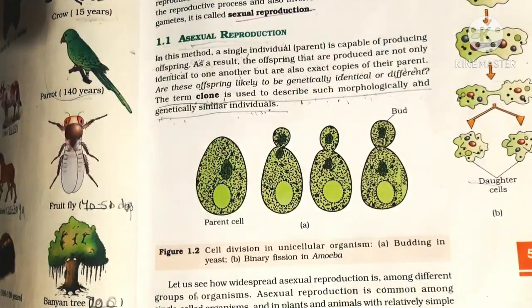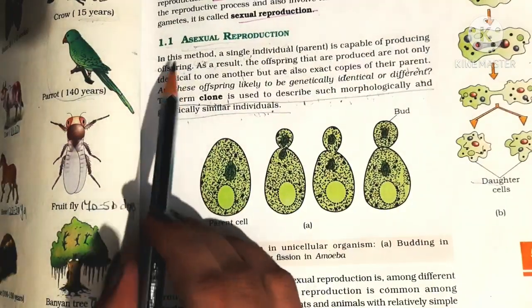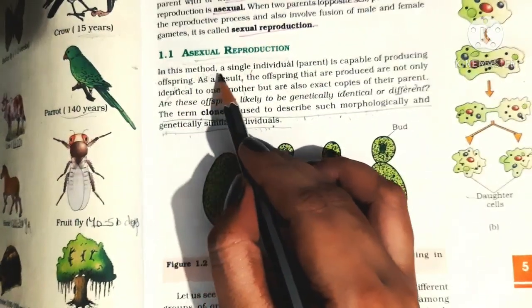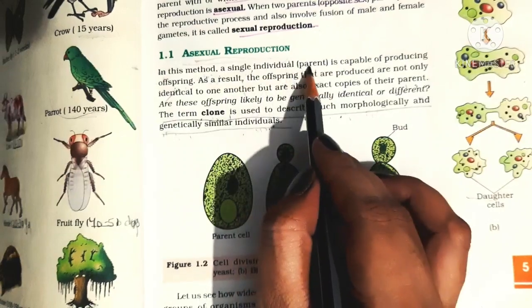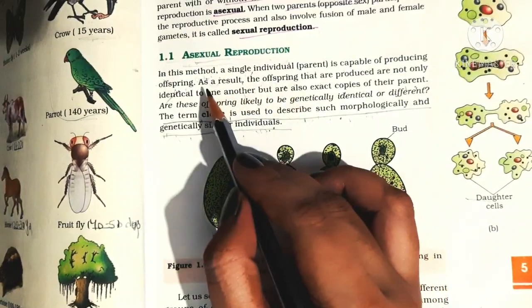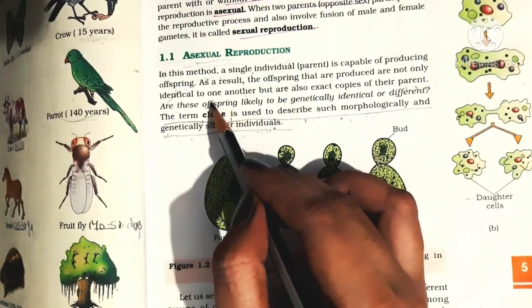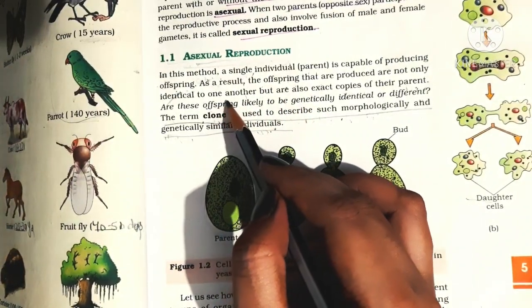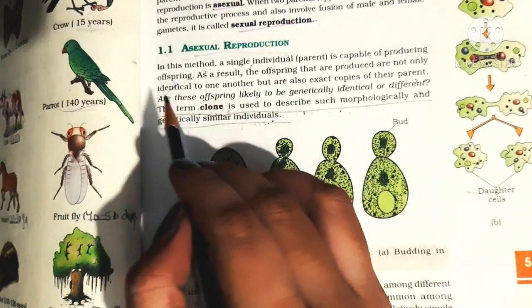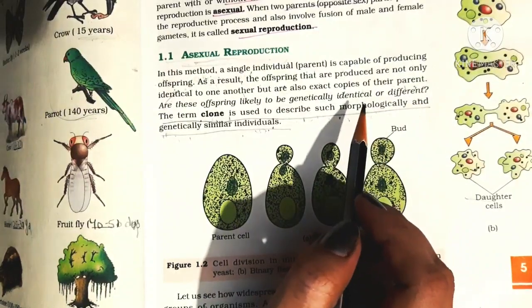Hello everyone, welcome to my channel. Today we are going to discuss asexual reproduction. In this method, a single individual parent is capable of producing offspring. The offspring that are produced are not only identical to one another but are also exact copies of their parent. These offspring are genetically identical.